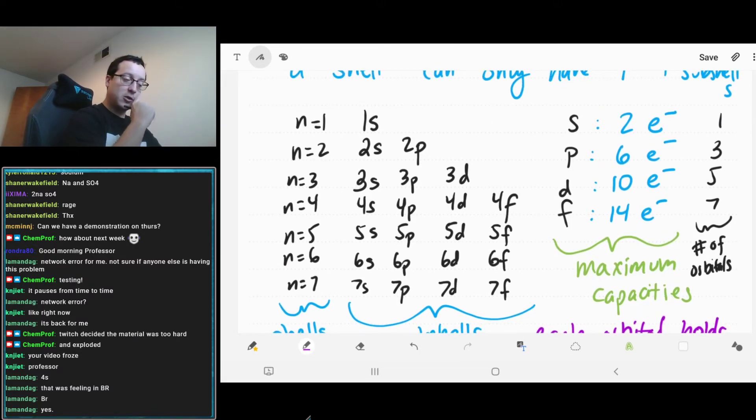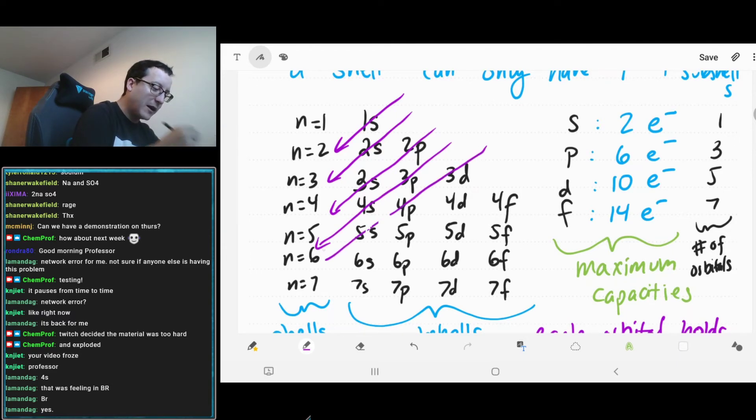If you arrange your subshells like this, where you just kind of write them all out, they will also tell you the order that you should fill your electrons. If you draw diagonal arrows through all of these, they will tell you exactly how you're going to fill up your shelves. So, that's going to tell us we're going to do 1s first. Then we go back up. Then we go through 2s. Then we go back up. Then we go through 2p. And then 3s.